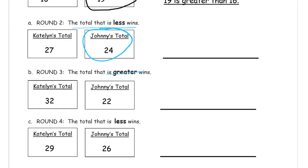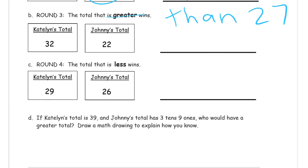Now I've zoomed out to show you the page here. A lot of first graders like to write really big and they can't fit everything on that one line, but if you write big and you can't fit it on that line, it's okay. The less one that's less wins, so 24 is less than 27. You don't have to write that big, really you don't, but if you do that's how you fit it on there and it's okay. Round three, the total that is greater wins, so that means Caitlin's going to win this one. So 32 is greater than 22.